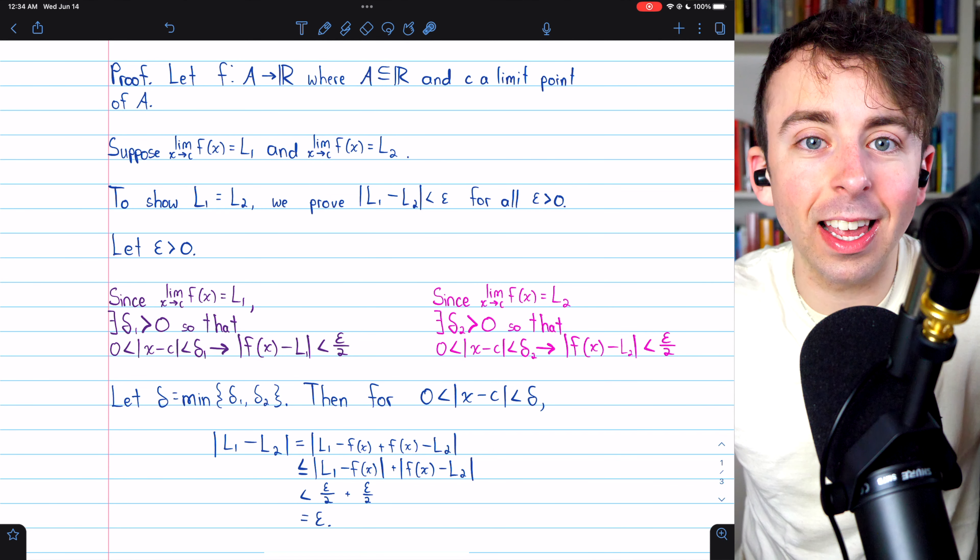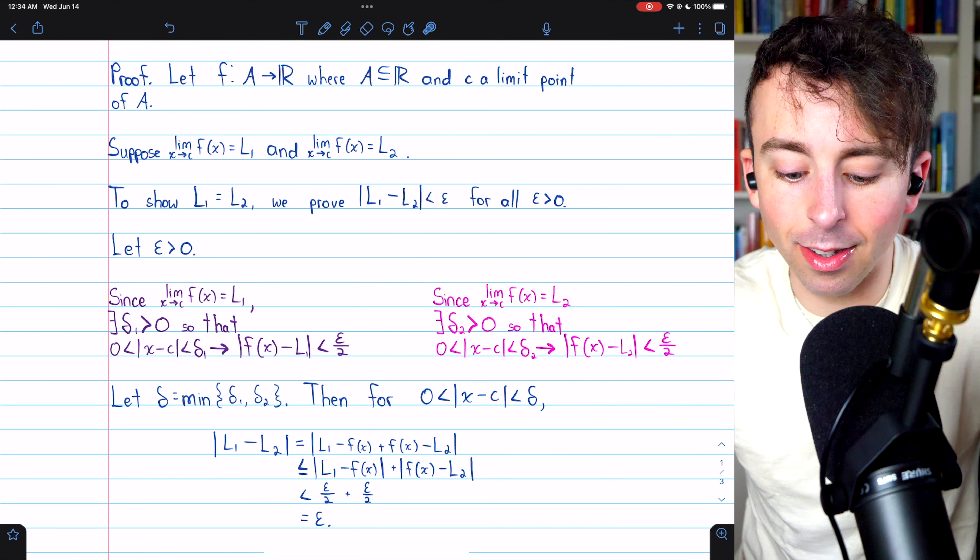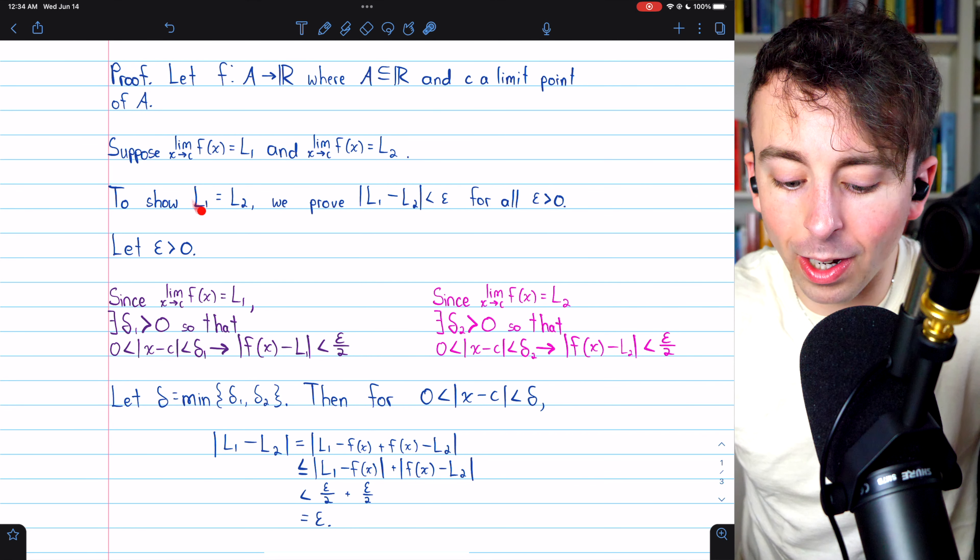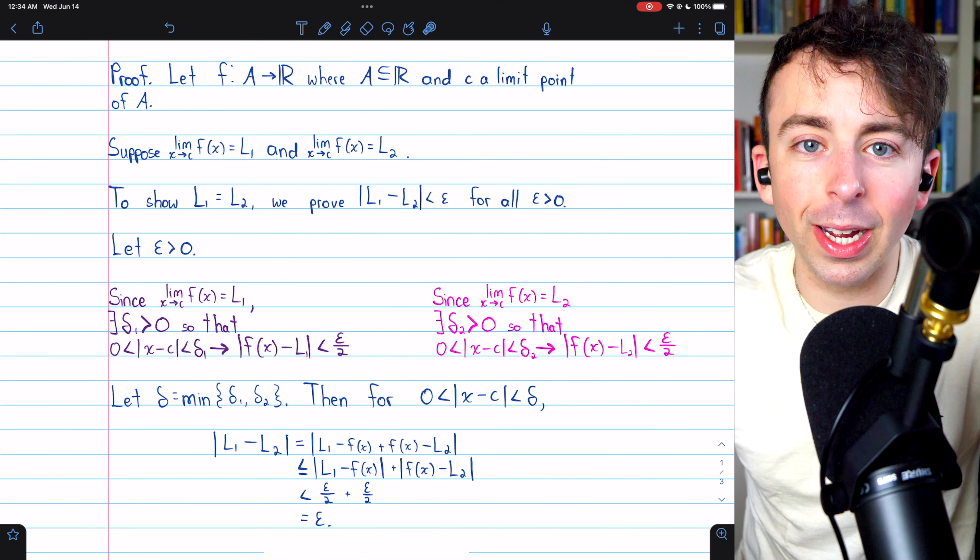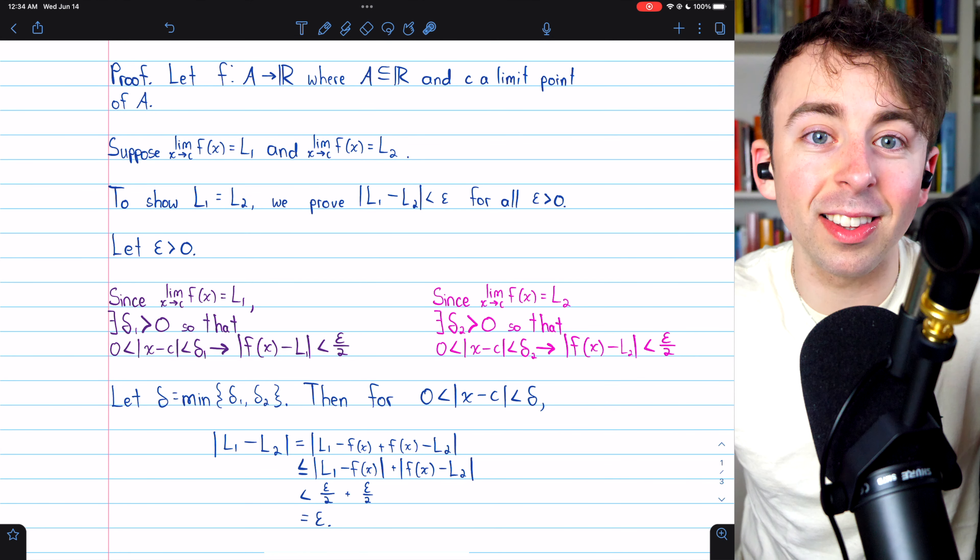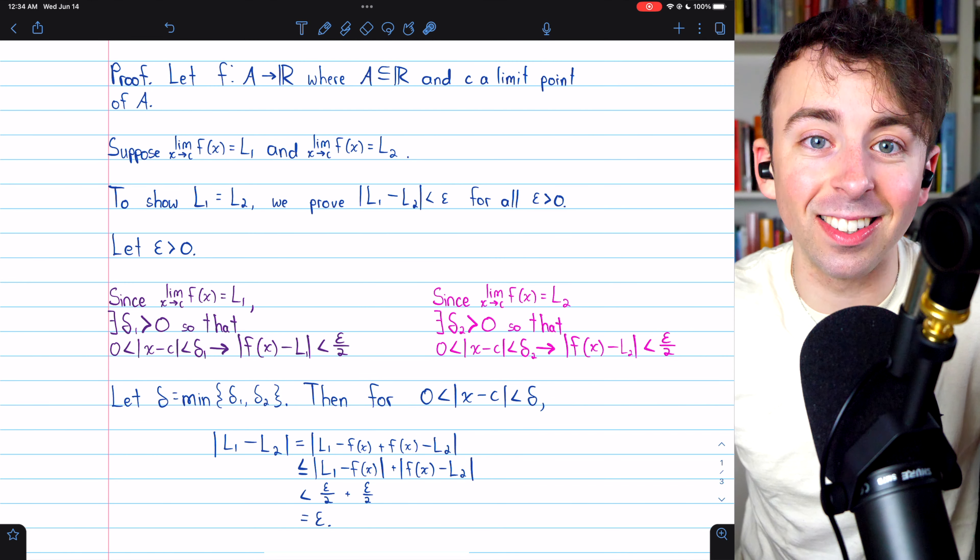And of course, distance can't be negative, so the distance between them must be 0. And so, L1 is equal to L2, which means the limit of a function at a point is unique. You can't possibly have two limits at the same point that are distinct.